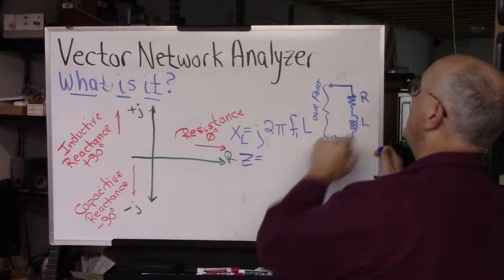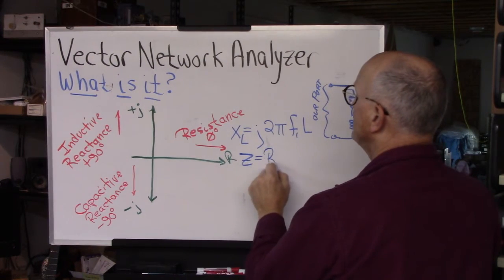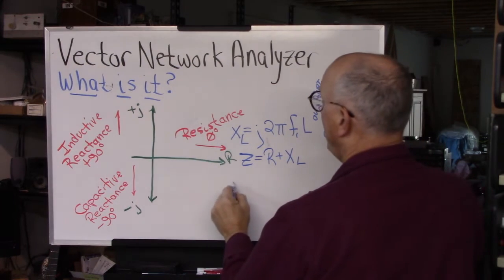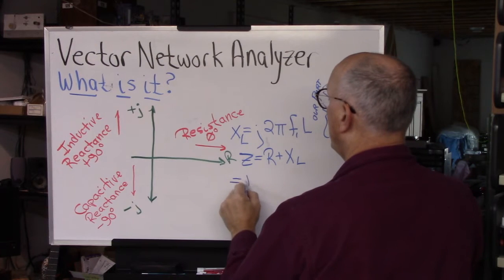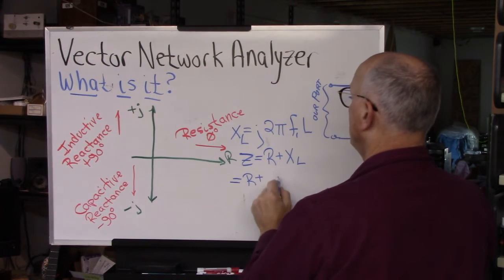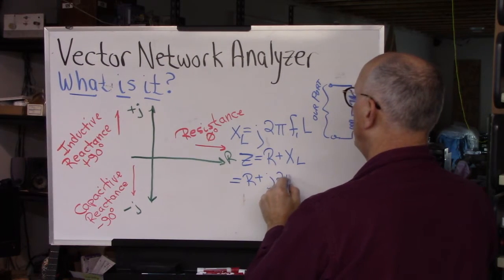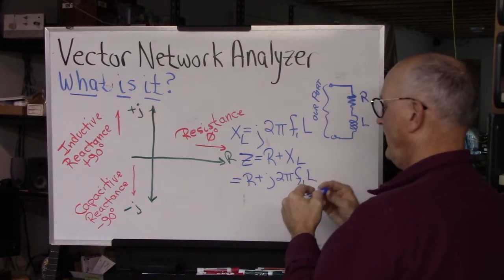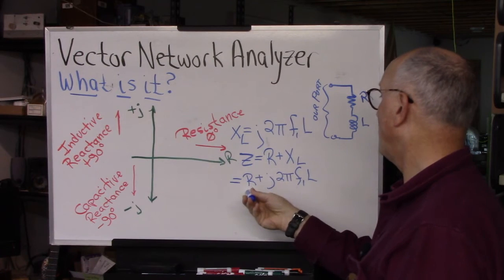And so the overall impedance of that, of this network, would be the resistance plus the inductive reactance, and that equals R plus j 2 pi F L.